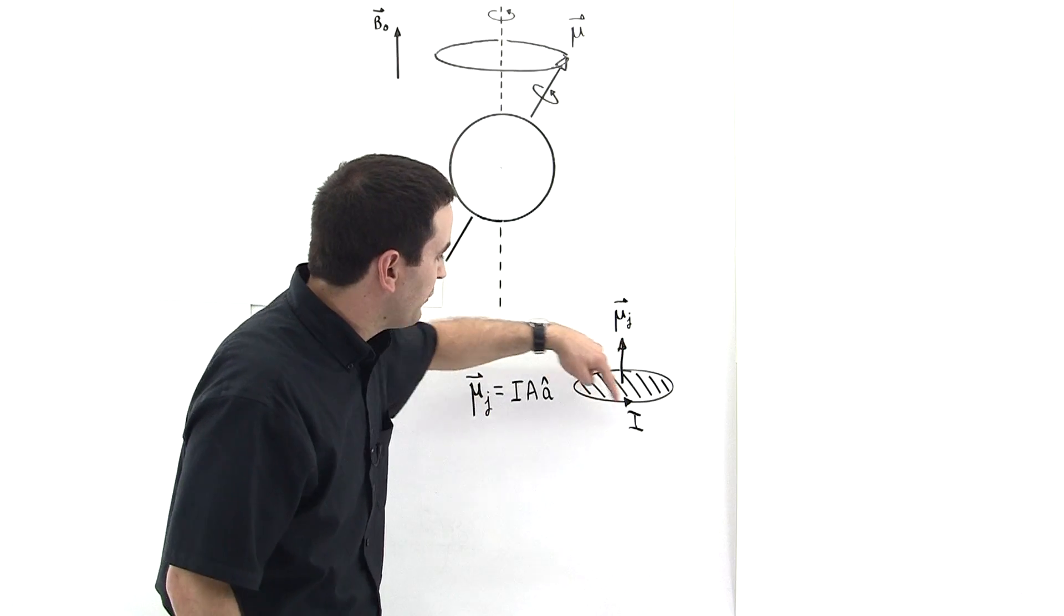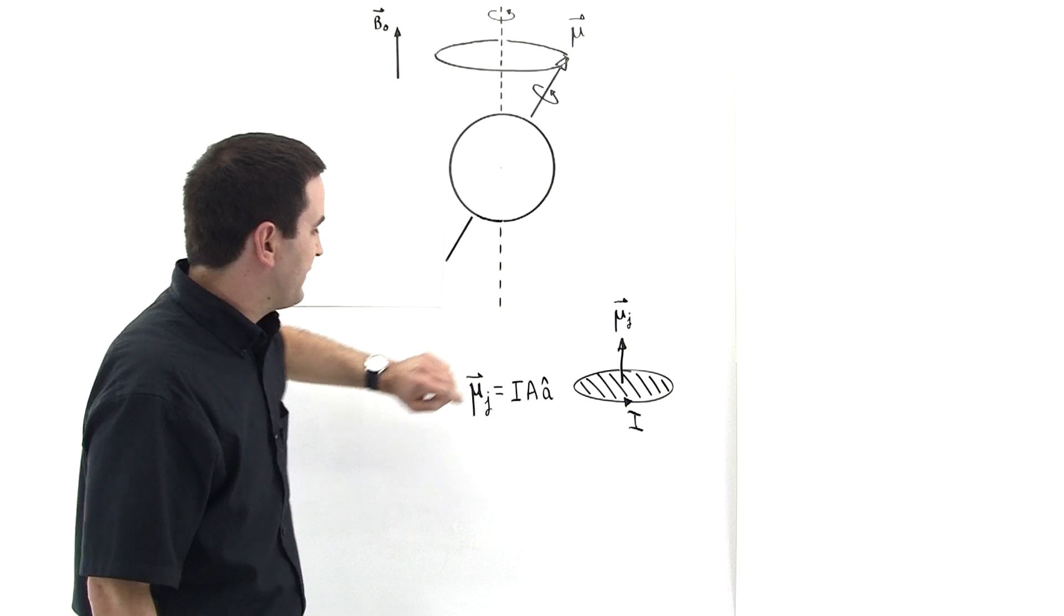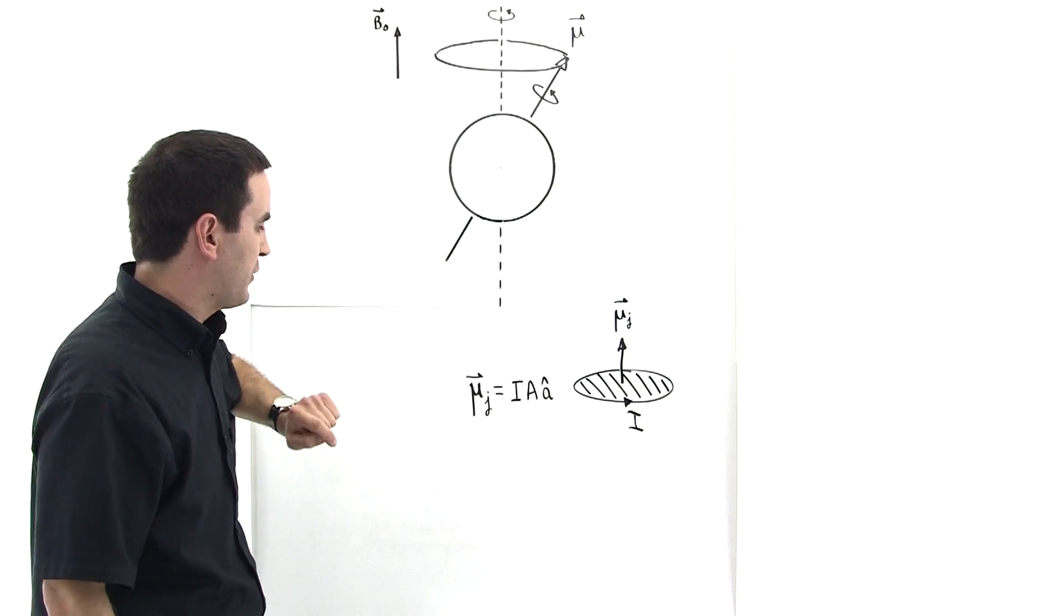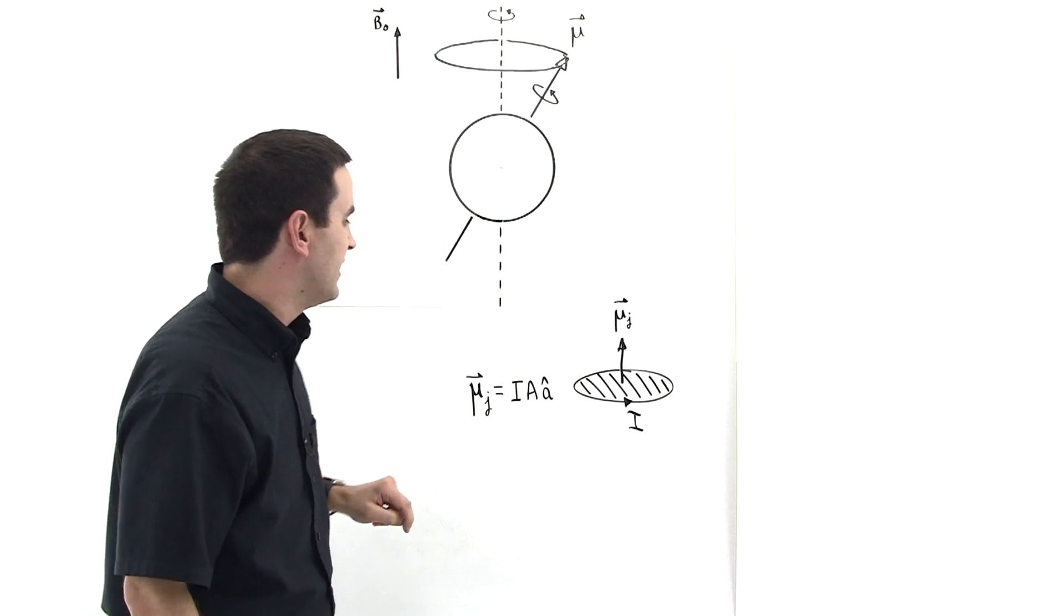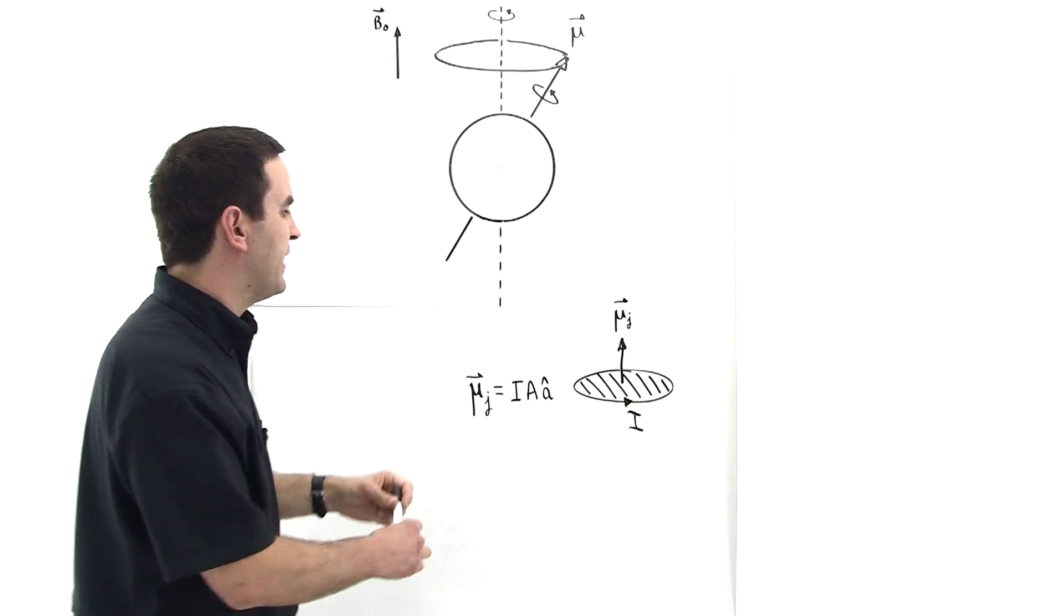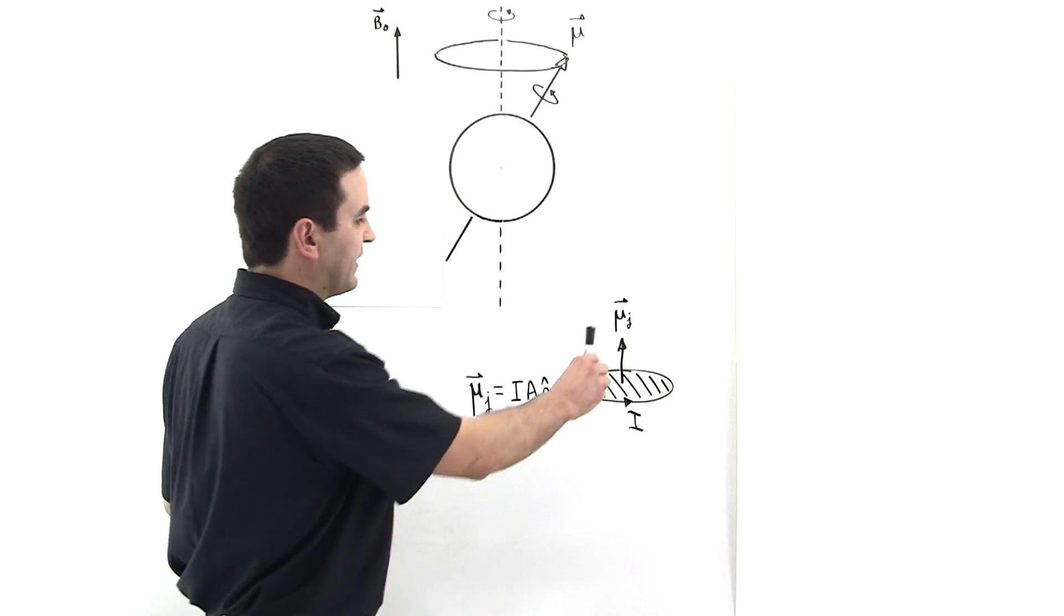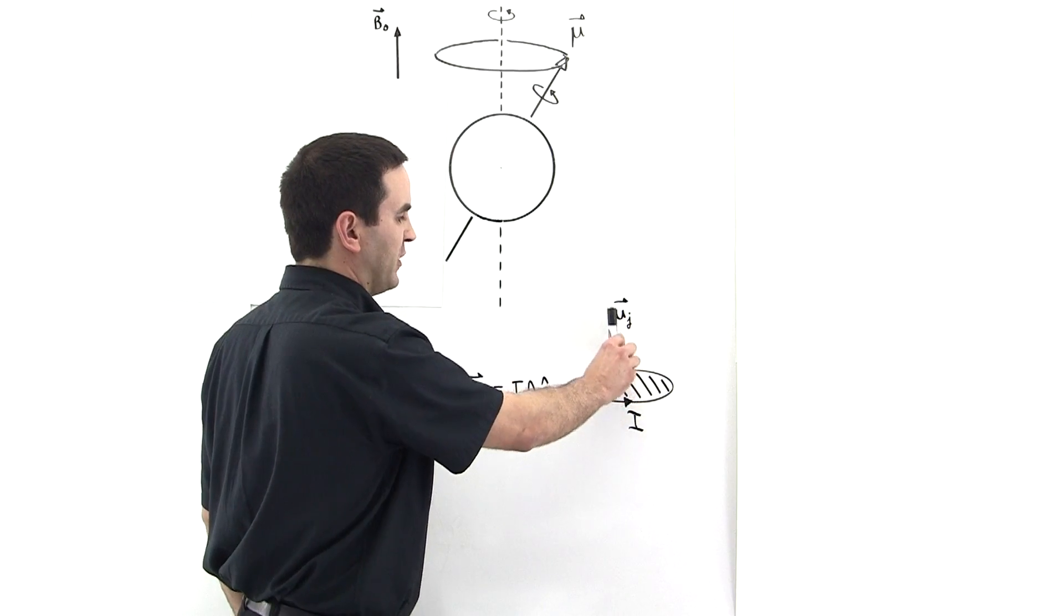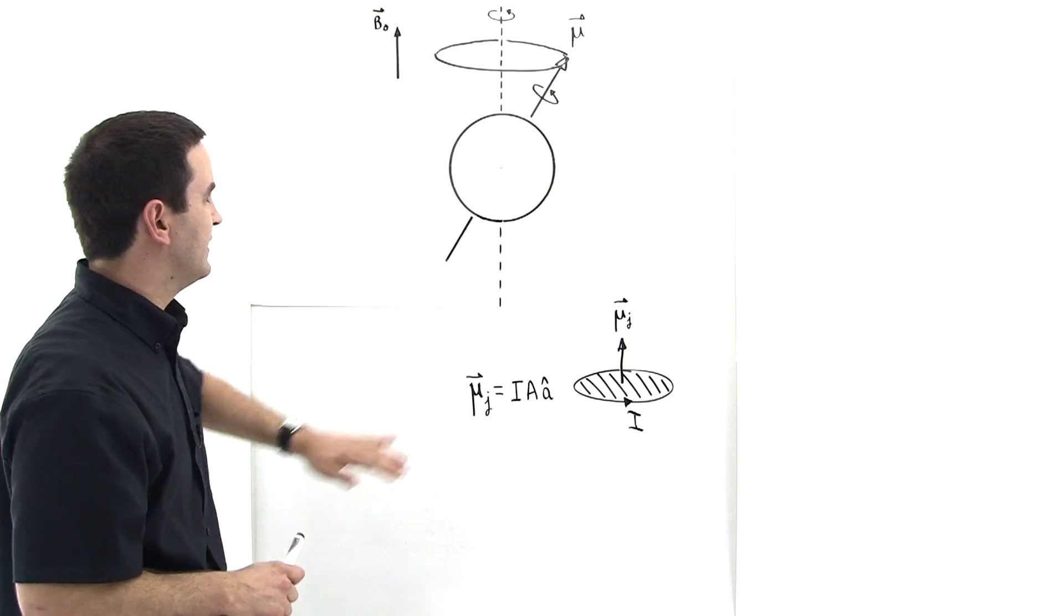Let's first consider this conducting loop of wire. The magnetic dipole moment is defined as the current going through the wire times the cross-sectional area that the wire encloses times a unit vector that is perpendicular to the surface area. So the magnetic dipole moment points in the direction that is perpendicular to the surface area.